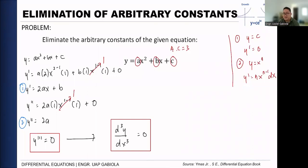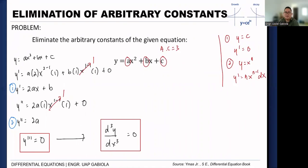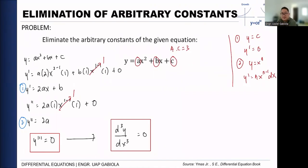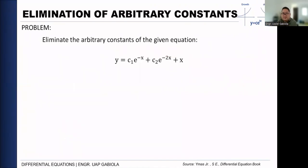For the third example, we have y = c₁e^(−x) + c₂e^(−2x) + x. How many arbitrary constants are present? We have two: c₁ and c₂. So we need to perform the derivative twice. The formulas we use are the power rule and the exponential rule: the derivative of e^u is e^u times the derivative of the exponent.